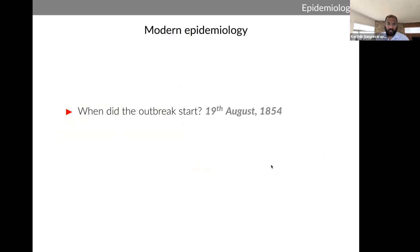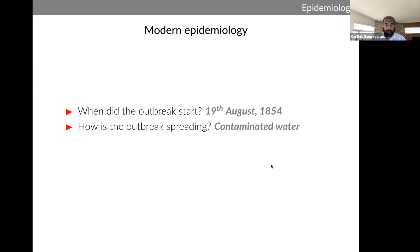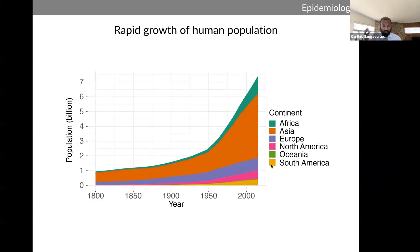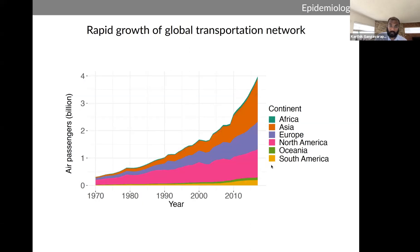The questions addressed in John Snow's study formed the basis for modern epidemiology — when did the outbreak start, how is it spreading, and what factors drive it? John Snow is now regarded as the father of modern epidemiology. Even in modern epidemiology, these same questions are asked, but much has changed since 1854. The human population has grown exponentially from 1 billion to over 7.1 billion, occupying a very wide geographic range. In 2015, over 4 billion people flew via airplanes, creating a very big and dense transmission network leading to complex patterns of spread that can't be described simply by case counts.